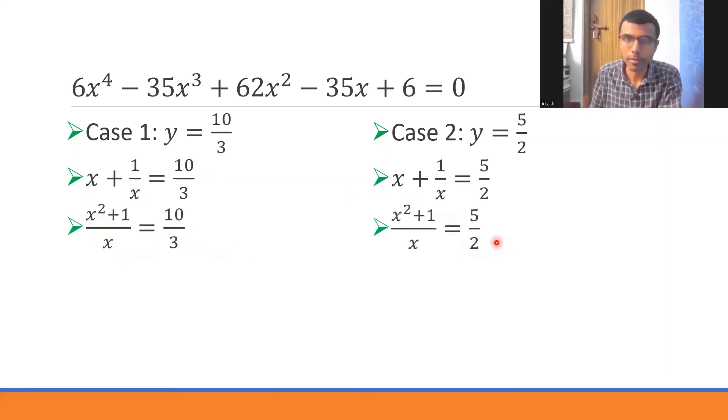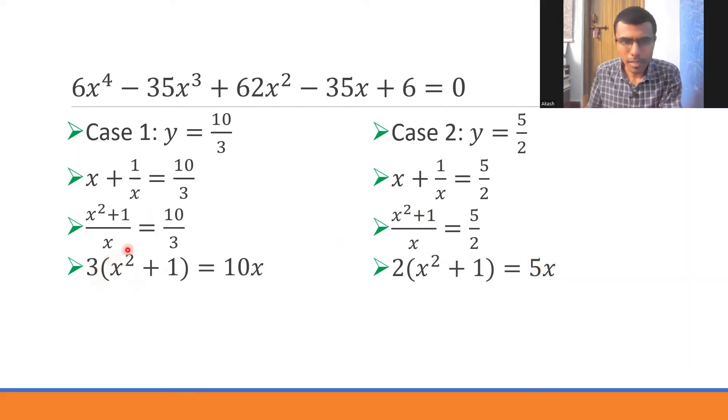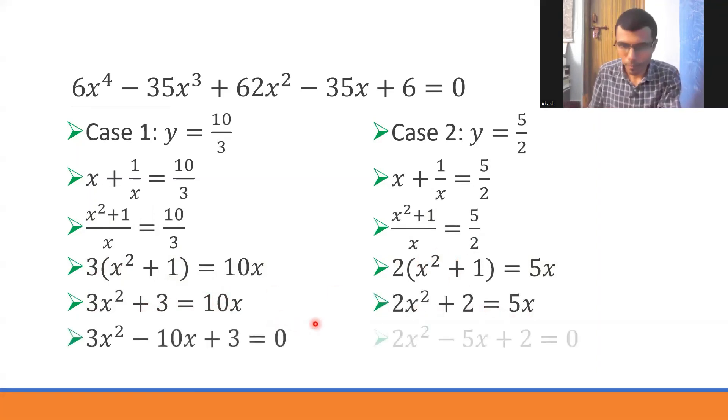This should be (x² + 1)/x = 10/3. Here also (x² + 1)/x = 5/2. Now do cross multiplication: send this 3 here and x here. Send this 2 here and x here. So 3(x² + 1) = 10x and 2(x² + 1) = 5x. Following this, 3x² + 3 = 10x, 2x² + 2 = 5x. Bring 10x here, bring 5x here.